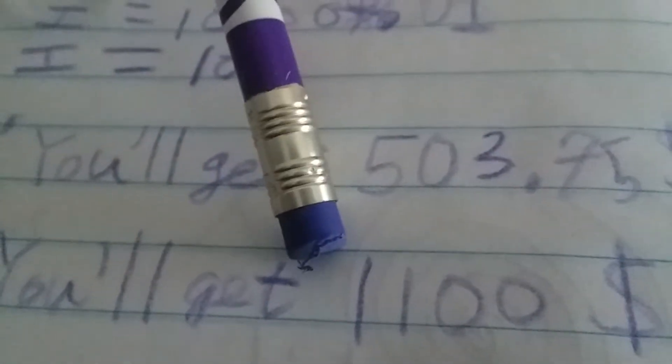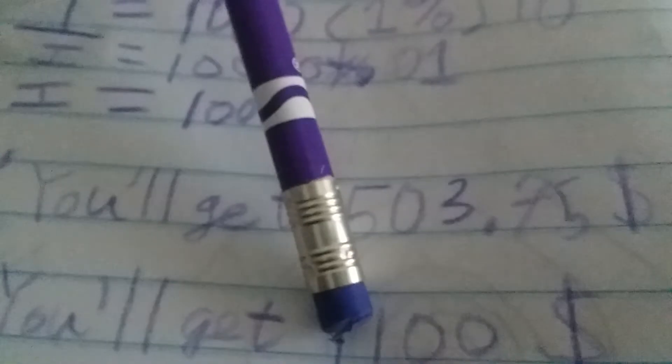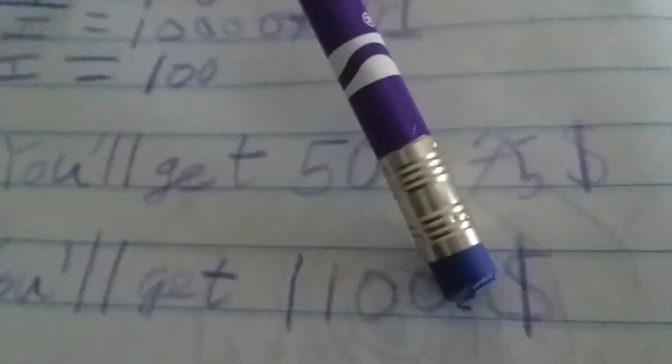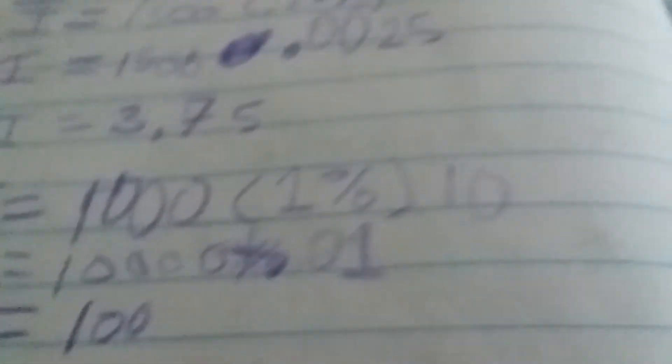For problem two, you'll get $1,100 in 10 years. That's a long time waiting. That's a lot of patience you need.